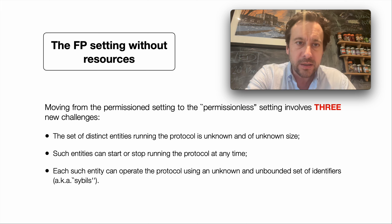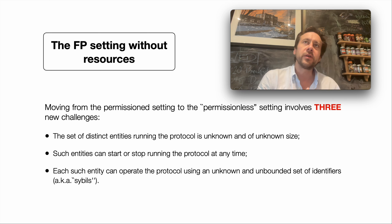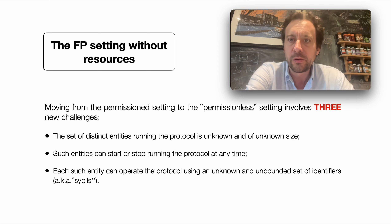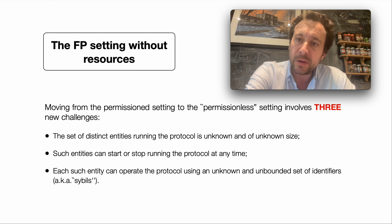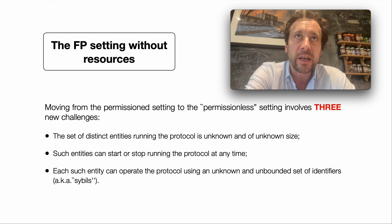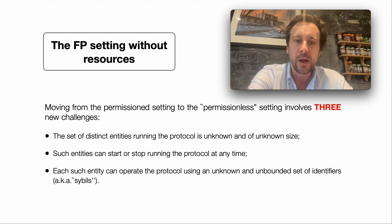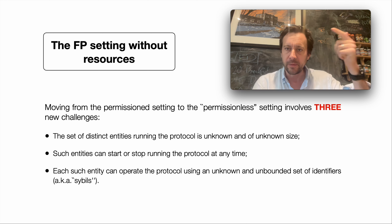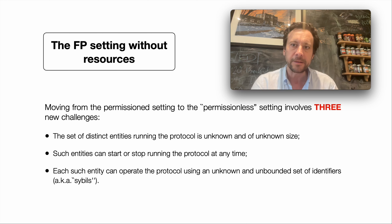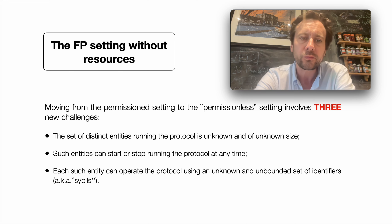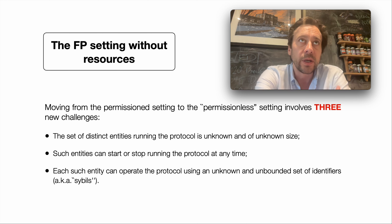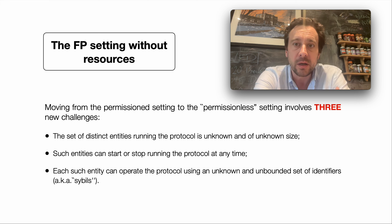Welcome back everyone. This is video 2 of the tutorial. In video 1 I gave a basic overview of what the tutorial is going to be about. In particular, we're going to be introducing this hierarchy of permissionlessness. We have four different settings starting from the most permissionless down to the least permissionless — the fully permissionless setting at the top with the permissioned setting at the bottom. What we're going to do in this video is start introducing the fully permissionless setting.